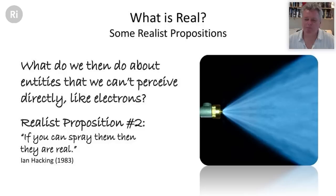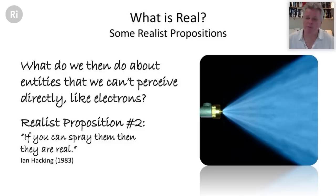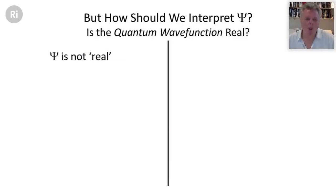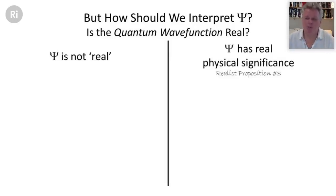We've assumed objective reality — the moon is still there when nobody looks — and the reality of invisible entities like electrons. But now we come to the tricky question: what do we do about the quantum wave function? This is really the heart of the Bohr-Einstein debate. I want to contrast the view that the wave function is not real — not having real physical significance — with the opposite assumption that the wave function describes the real physical state of real physical things like electrons.